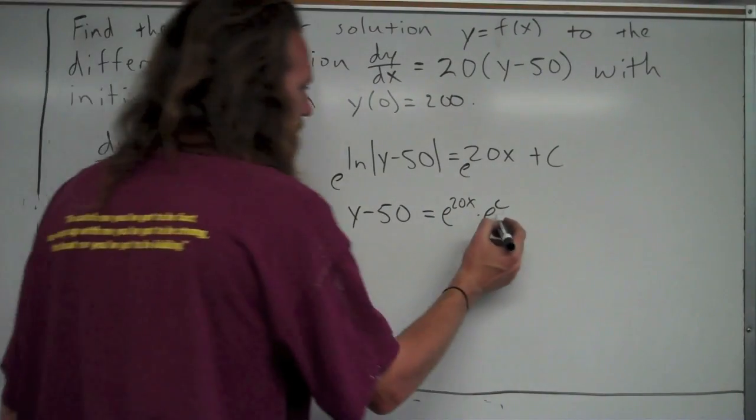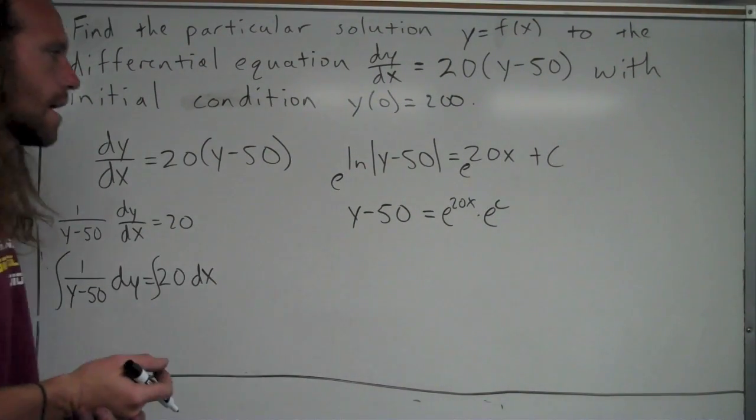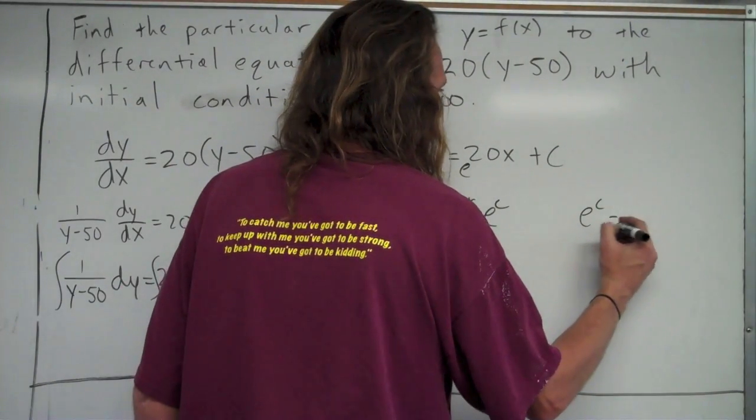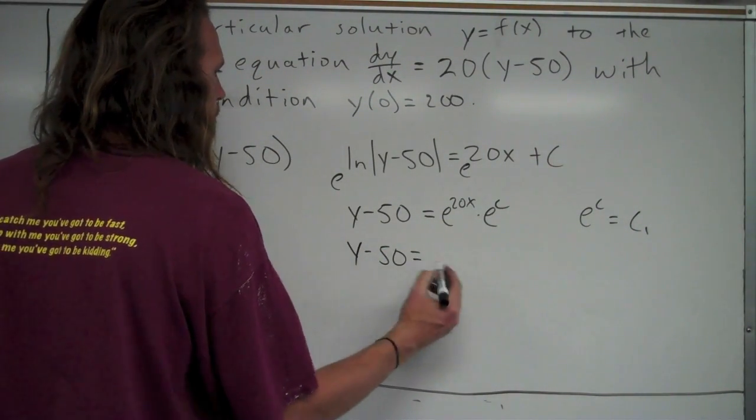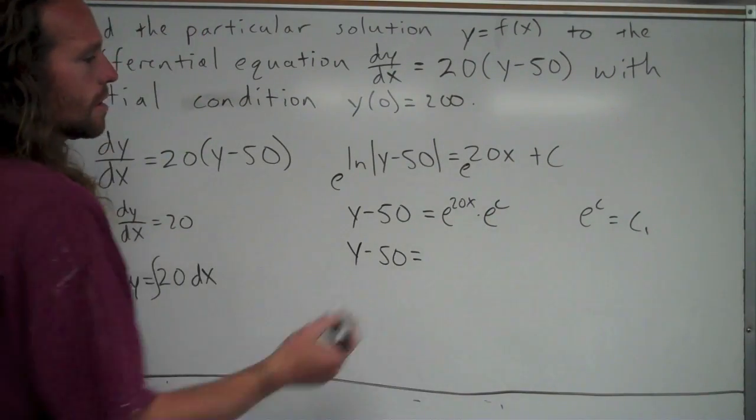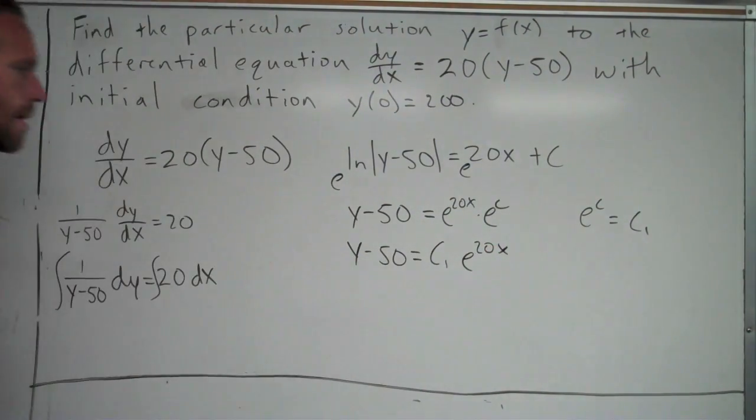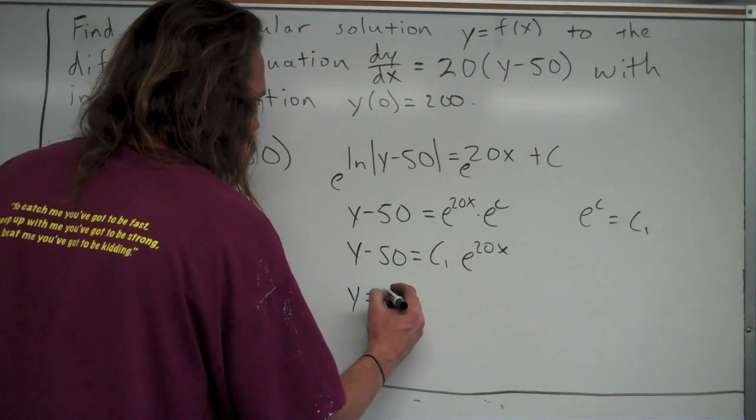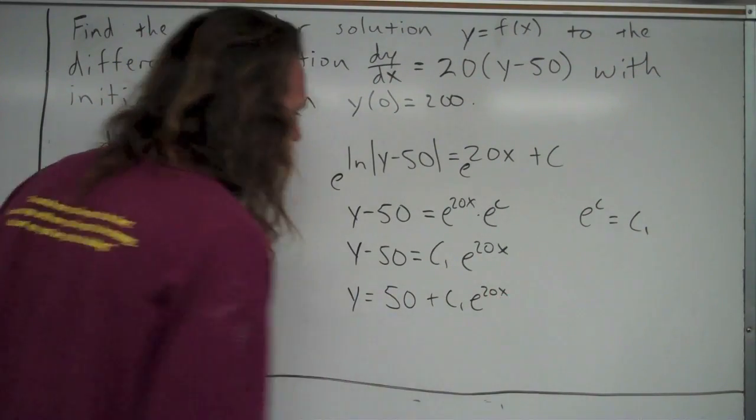e to the c, well, e is just a constant. c is some constant. So, when I have a number raised to a number, it's just another number. I'm a lot of times pretty lazy and I just write, replace it with c. But I probably technically should say, e to the c, let's call that c1. So, I have y minus 50 is equal to c1 e to the 20x. I'll go ahead and add 50 to both sides. And now I've solved for y. It equals 50 plus c1 e to the 20x.